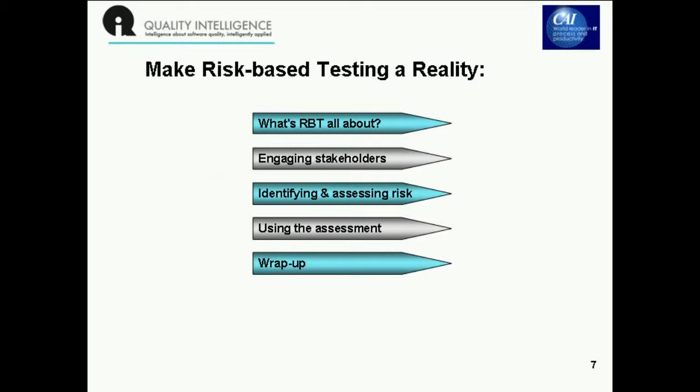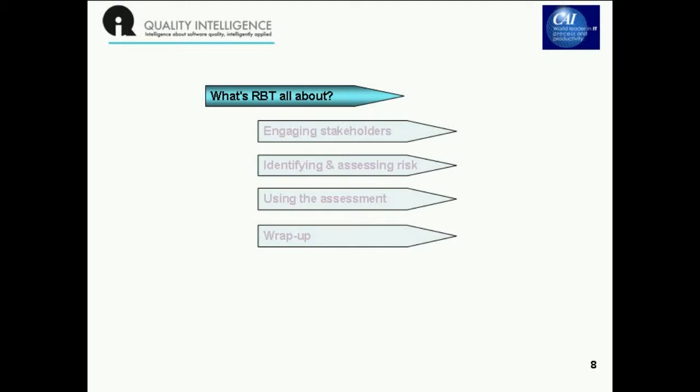If we don't do any testing at all, we'll have a very large number of unknowns. If we test absolutely everything, we might have complete certainty. But in reality, there's no such thing as complete testing — I don't know anybody who's ever achieved it, even on a relatively small application. So as testers, we're constantly looking for strategies to direct the kind of coverage we need.